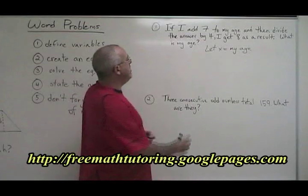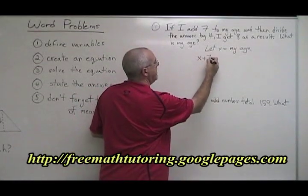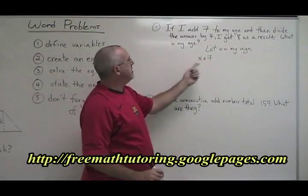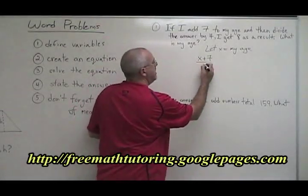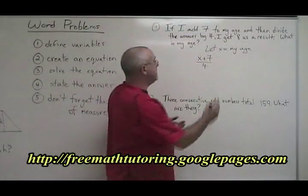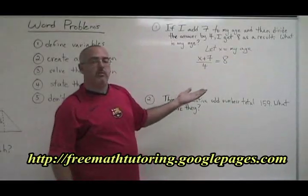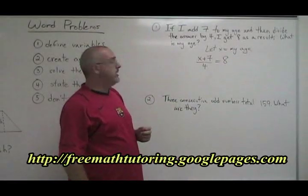If I add 7 to my age, it means my equation will have x plus 7. If I then divide the answer to this by 4, I can show that by putting a 4 here. I get is the equal sign 8. Now I have an equation which, if I solve it, will give me the right answer to this question.